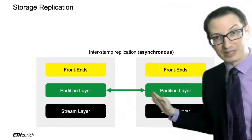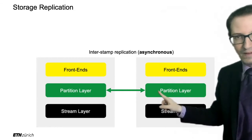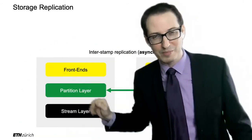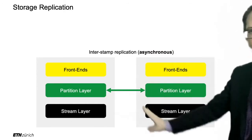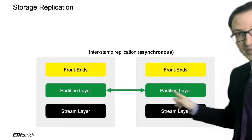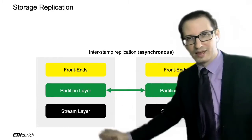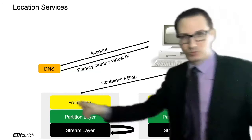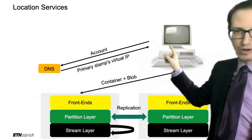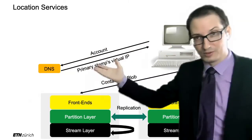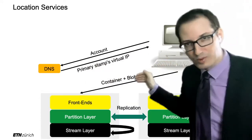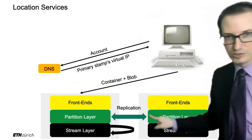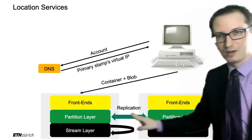The second kind is asynchronous replication across stamps. Maybe you're in Europe and you ship data over to North America — but this is done later; you do not block the user. You return to the user and say it's okay, we've stored everything in this storage stamp. Then later — sometime in the day — you communicate with another data center somewhere else and asynchronously replicate. This works over the partition layer. So inside the stamp: synchronous replication. Across stamps — North America, Europe, Asia — asynchronous replication.